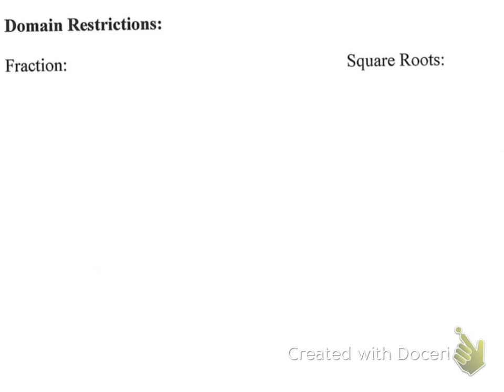So the only time you have a restriction in your function is if there's a fraction or if there's a square root. So the issue with a fraction is if the variable is located in the denominator, your variable can never be equal to 0 because we know if I do 1 divided by 0 or anything divided by 0, it equals an undefined value.